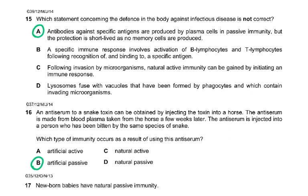Question 15: which statement concerning the defense of the body against infectious diseases is not correct? You have to read the ones which are correct and find which is wrong. The answer is A: antibodies against specific antigens are produced by plasma cells in passive immunity. In passive immunity we give ready-made antibodies, but the protection is short-lived as no memory cells are produced. This is wrong because plasma cells are produced in natural active immunity, not passive immunity.